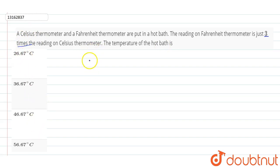First thing is that the relation between Celsius and Fahrenheit is this equation. And the question says that temperature in Fahrenheit is three times temperature in degrees Celsius. So we will put this value in Fahrenheit because all the answers are in Celsius.